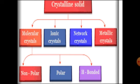Next is network crystal. Can you see the main component present in a pencil? Yes, it is graphite — an allotrope of carbon. Another allotrope of carbon is diamond. In diamond, all the carbon atoms are bonded in a three-dimensional network structure and they have covalent bonds. These solids are called network solids or network crystals.